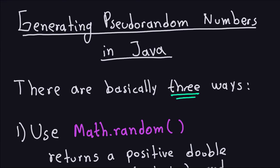Hello and welcome again. In this video we'll talk about generating pseudo-random numbers in Java. In particular, we will talk about three ways to do it. Two of them will not be proper for cryptographic applications, but one of them is. We're going to start with the first one.